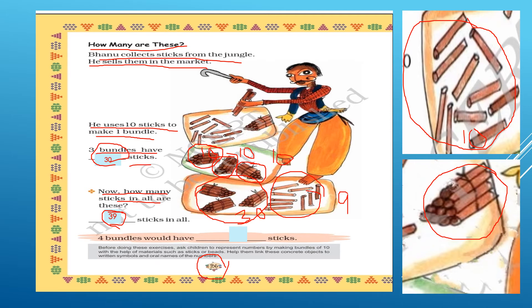And four bundles would have how many sticks? There are 30 sticks in three bundles, and if there were another bundle, then there would be another 10 sticks. So, there would be in total 30 plus 10 — 40 sticks.